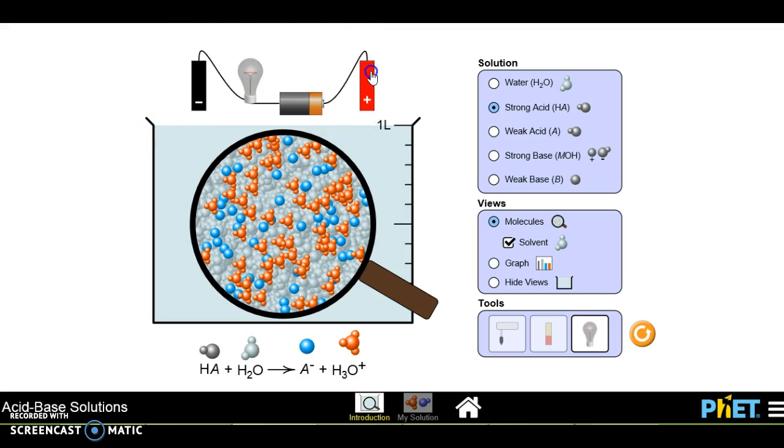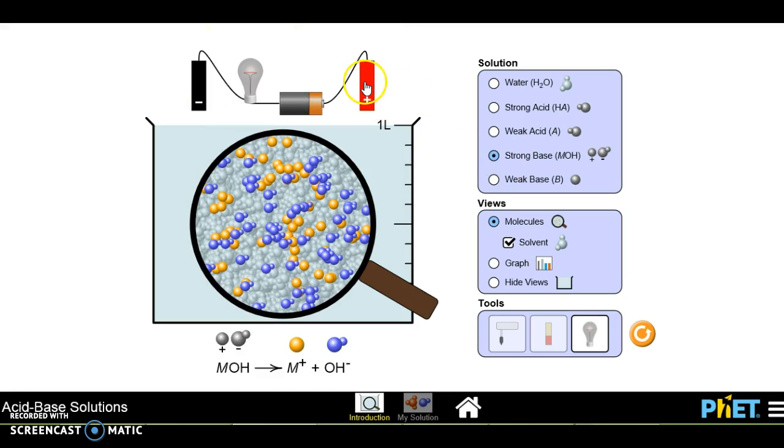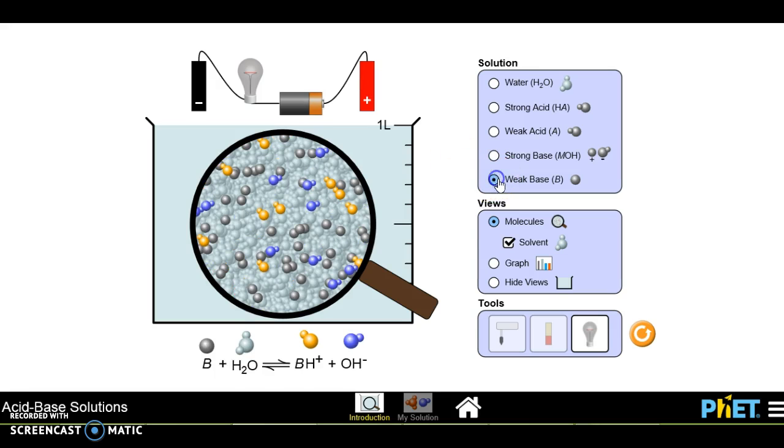This is a strong acid. Let's see the weak acid. You can see the difference in the conduction. Strong base, and then the weak base.